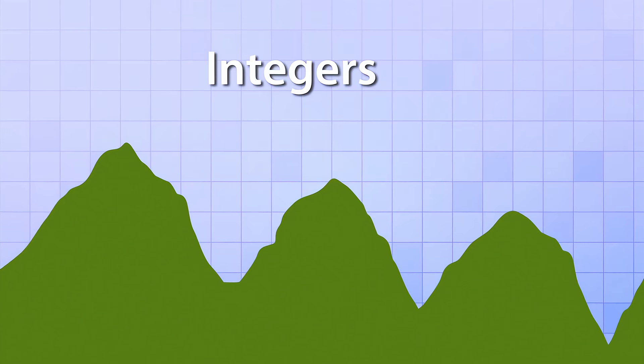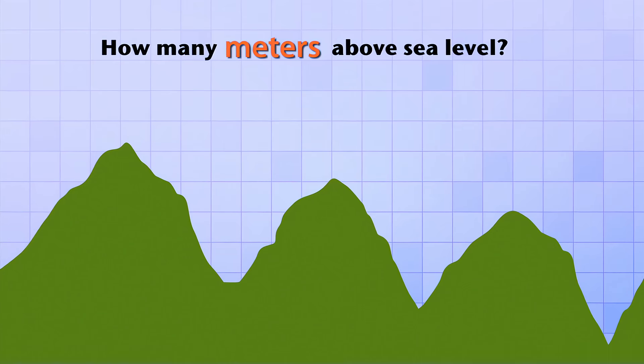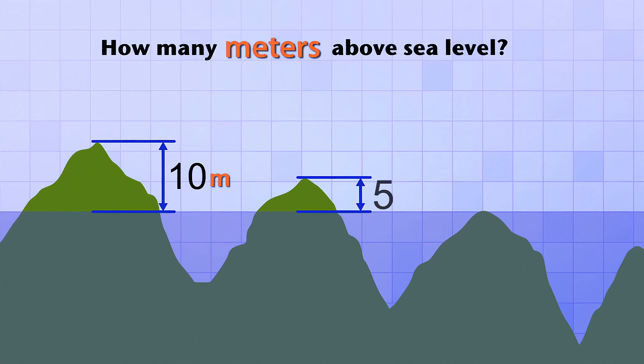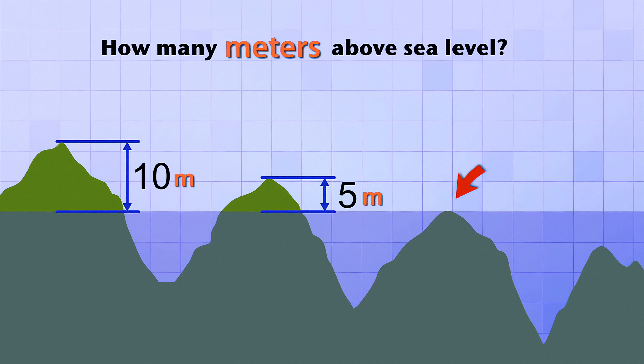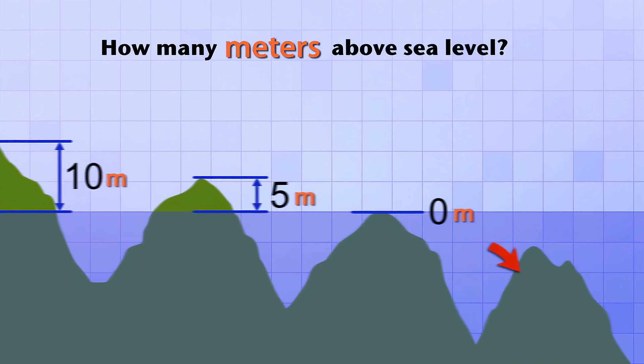Let's say we want to use integers to measure how many meters above sea level small islands are. This island is 10 meters above sea level. This island is only 5 meters above sea level. And this island here happens to be exactly the same height as sea level. So we can use the integer 0 to show how its height compares to sea level.